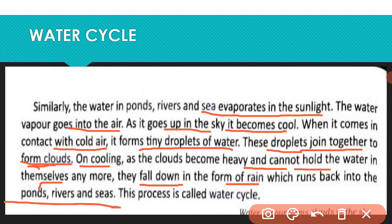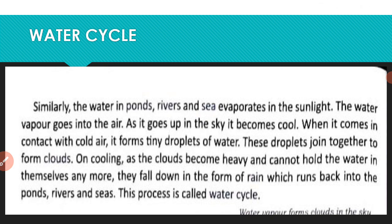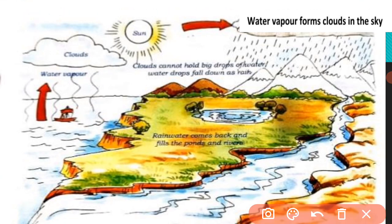This process is called the water cycle. The rainwater runs back into the ponds, rivers and seas. Now let's look at the picture that explains the water cycle.